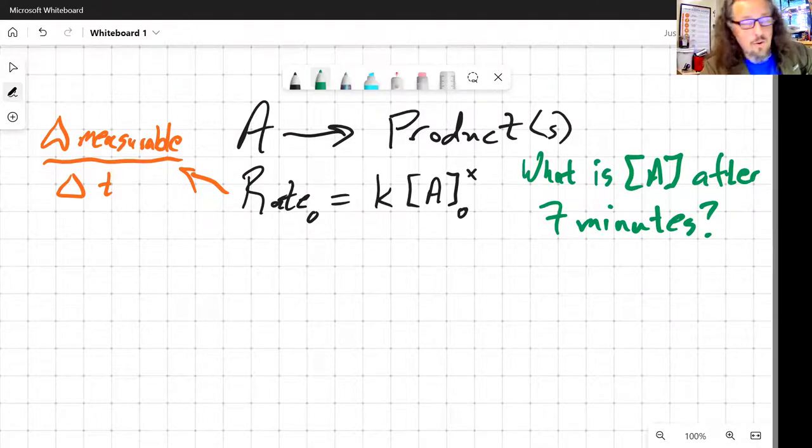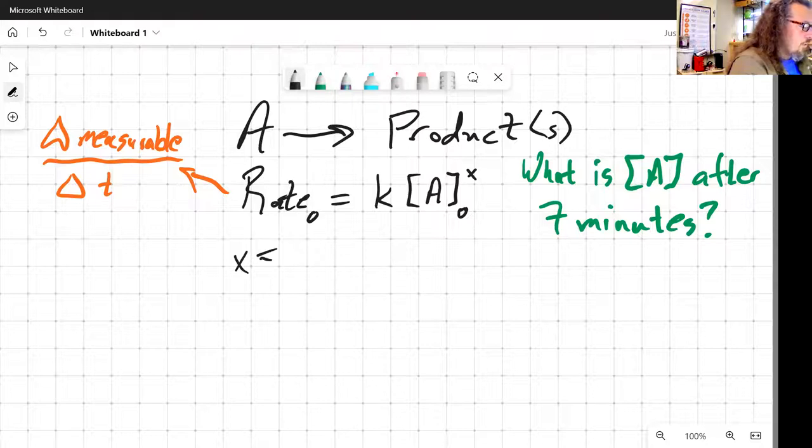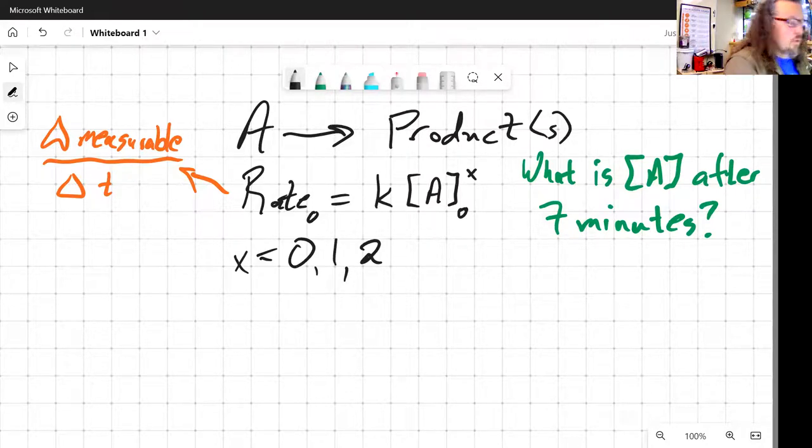So generic rate law expression, as shown there, we can make assumptions for our purposes, for a simple first set of conditions. We know that x is equal to 0, 1, or 2. We've said that those are the only three possible options for us.